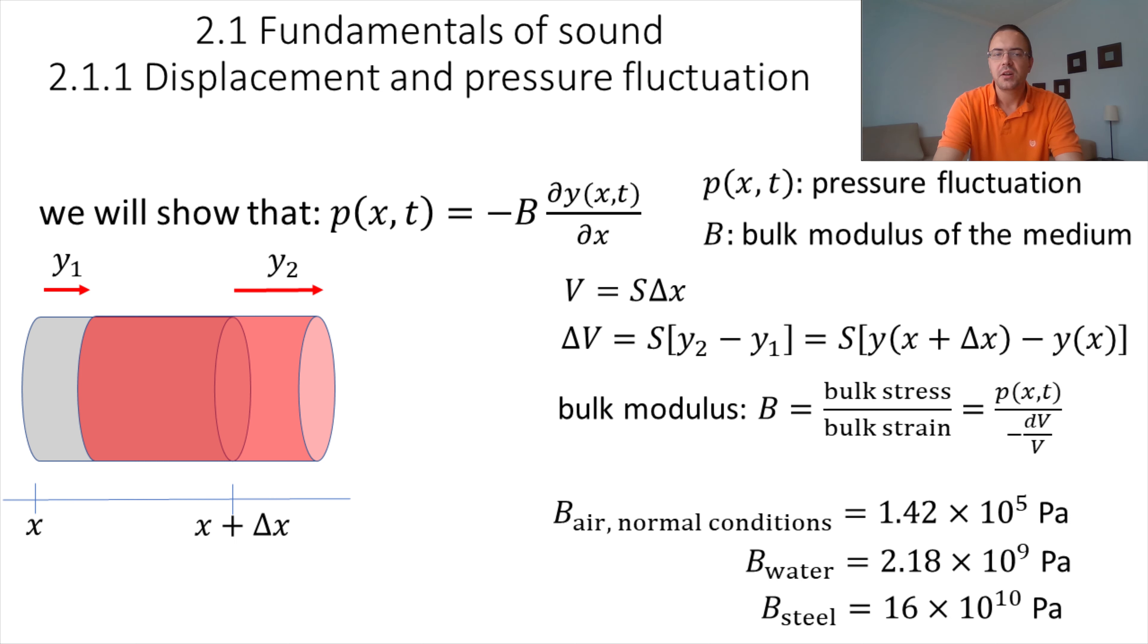Now we need to introduce the bulk modulus. The bulk modulus is a quantity that represents the stress you need to apply to a material to change its volume. So it is the ratio of the bulk stress divided by the bulk strain. So here, the bulk stress will be the pressure fluctuation p, and the bulk strain is equal to minus dV over V. The minus sign here is to get a positive number for the bulk modulus. When you apply a positive stress on a material, its volume decreases, so delta V is negative, and so minus delta V is positive.